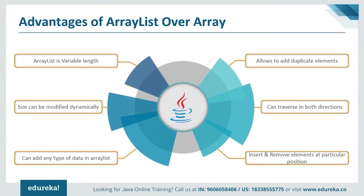Now let's jump into the last topic of today's discussion — advantages of ArrayList over arrays. First, ArrayList is variable length; arrays are fixed length and you cannot change the size once they are created. But ArrayList can grow and shrink dynamically. The size is modified dynamically — when you add elements the size increases, and when you remove elements it decreases. You can add any type of data and it also allows duplicate elements. You can traverse an ArrayList in both forward and backward directions using ListIterator, and it allows you to insert and remove elements at a particular position.